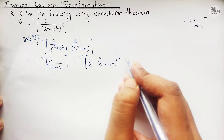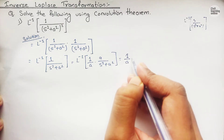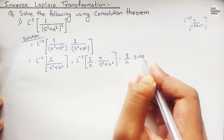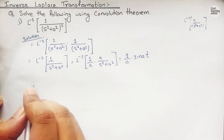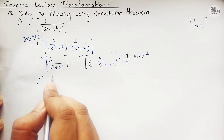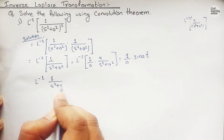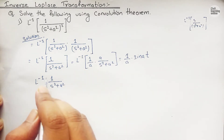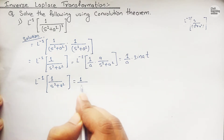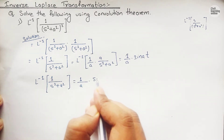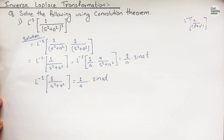We know that the inverse Laplace transformation of a/(s²+a²) is sin(at), so we will have (1/a)·sin(at) for the first factor. Similarly, the second factor, the inverse Laplace transformation of 1/(s²+a²), is also going to be (1/a)·sin(at). Now we will apply the convolution theorem.